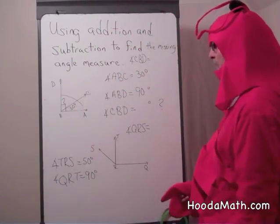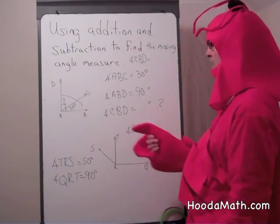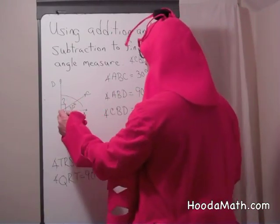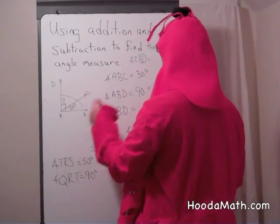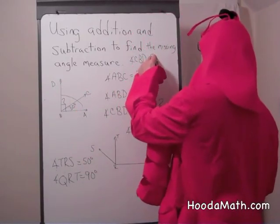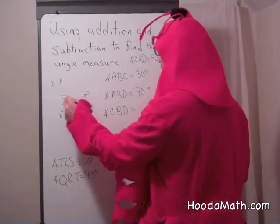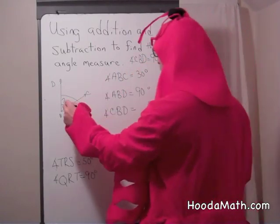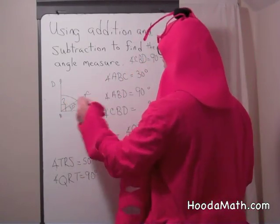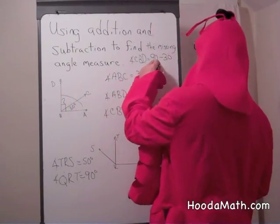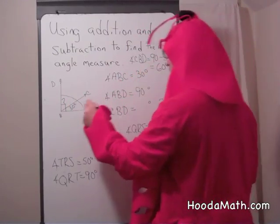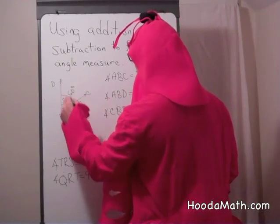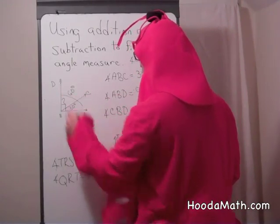Angle CBD would be the difference of the big angle ABD, which is 90, minus 30. So our missing angle would be 60 degrees. Because 30 plus 60 equals 90 degrees.